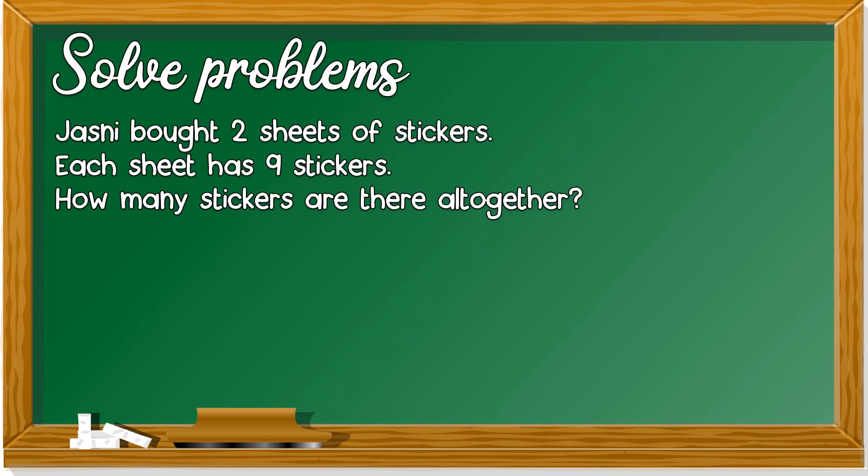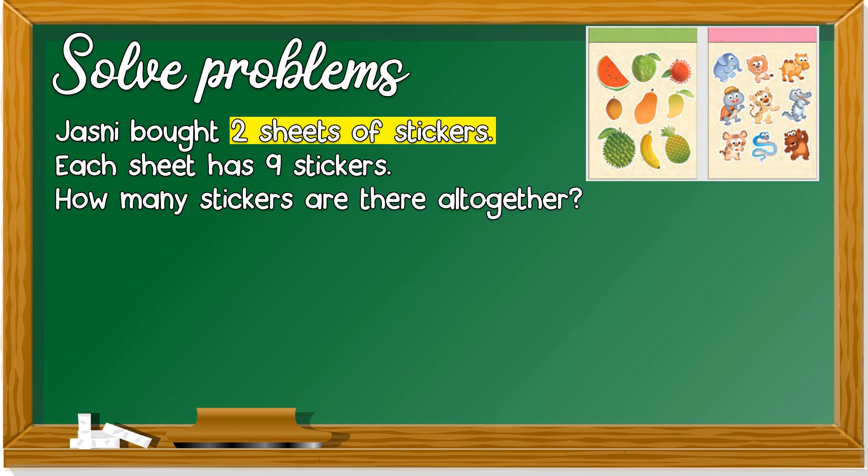Next, we look at solving problems. Jasni bought two sheets of stickers. Each sheet has nine stickers. Let's look at the keyword. Two sheets of stickers. Each sheet has nine stickers. The keyword: each. And all together. They want to know how many stickers are there all together. What's the operation here? It's multiplication.